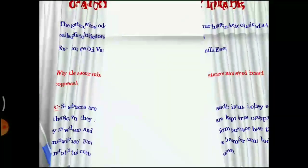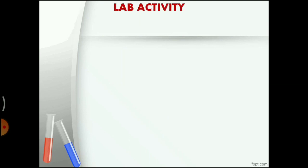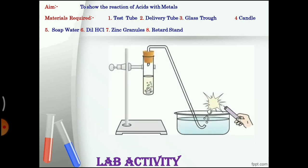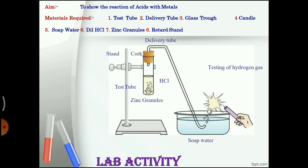To observe the reaction of acids and bases with metals, we see a lab activity. The aim of the lab activity is to show the reaction of acids with metals. Materials required: a test tube, a delivery tube, glass trough, candle, soap water, dilute HCl, zinc granules, rubber stopper with delivery tube, etc. Arrange all the apparatus as shown in the figure and then do the lab activity.